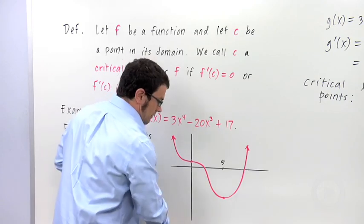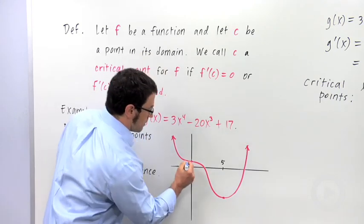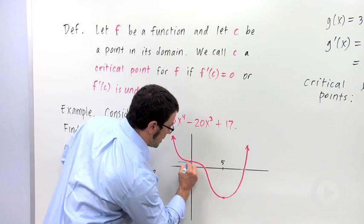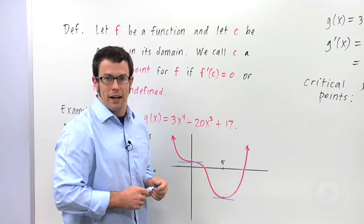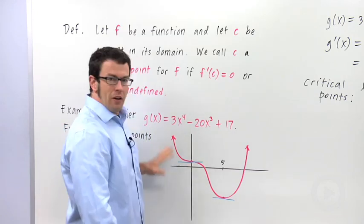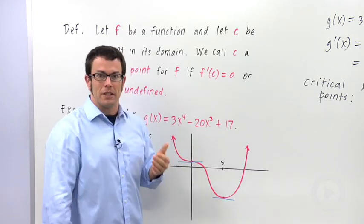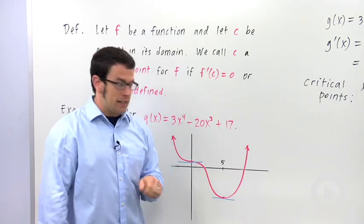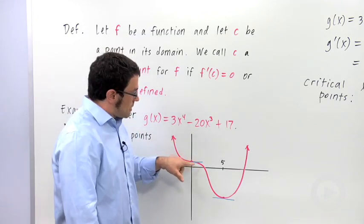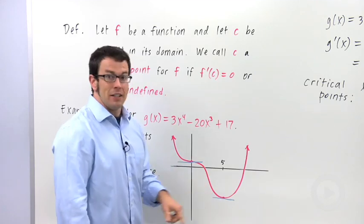Their geometric significance is that these are the points where the tangent is horizontal. If you were to draw a tangent line at these two points, you'd get a horizontal line. So once again, the critical point is a point where the derivative equals 0 or is undefined, and its significance, at least in this example, is that these are the points where the tangent line is horizontal.